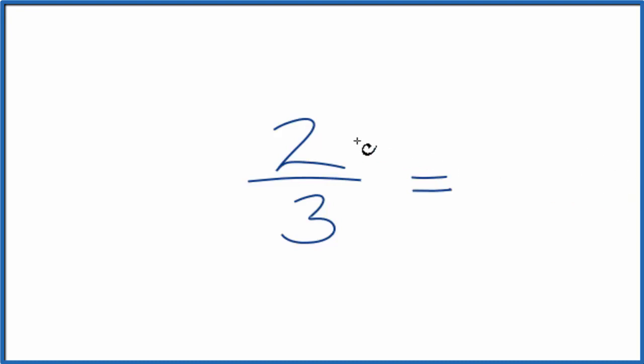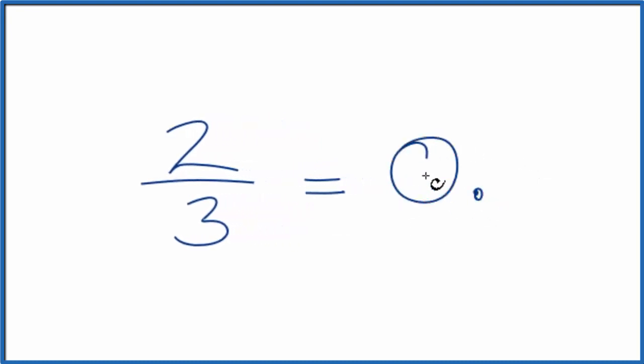Essentially what we're trying to do is figure out 2 over 3, what is this in decimal form? We know that 2 is smaller than 3, so we're going to have something that's less than 1. It's going to be zero point something.